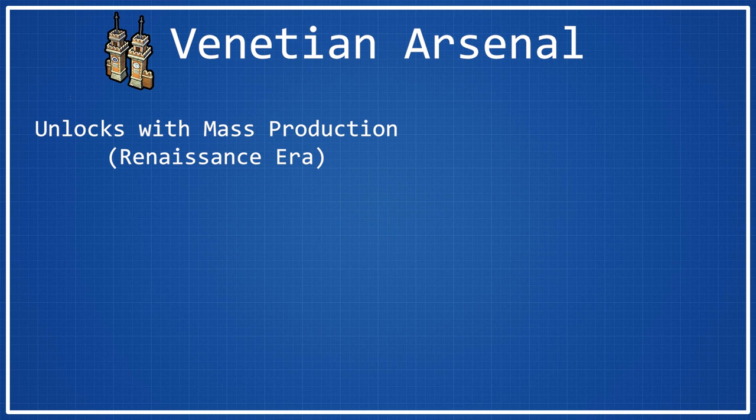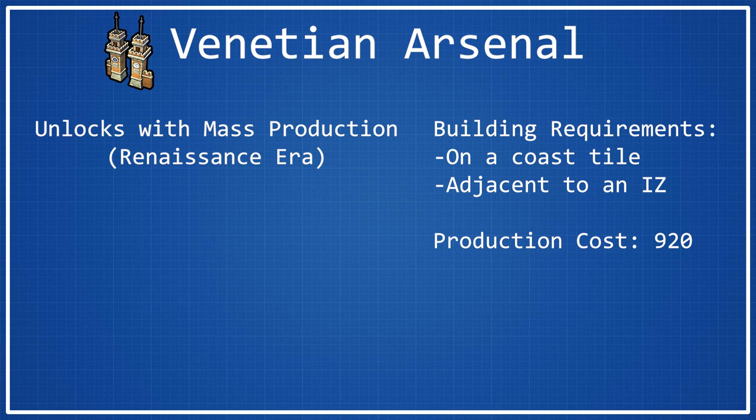Once you research mass production, the building requirements for Venetian Arsenal are a little more difficult to achieve than some other wonders. You have to put it on a coast tile that is adjacent to an industrial zone district. This is more complex because you actually have to consciously look to get this, because obviously you have to put an industrial zone next to a coast tile. This often isn't the best thing just because of where you get adjacency bonuses for industrial zones.